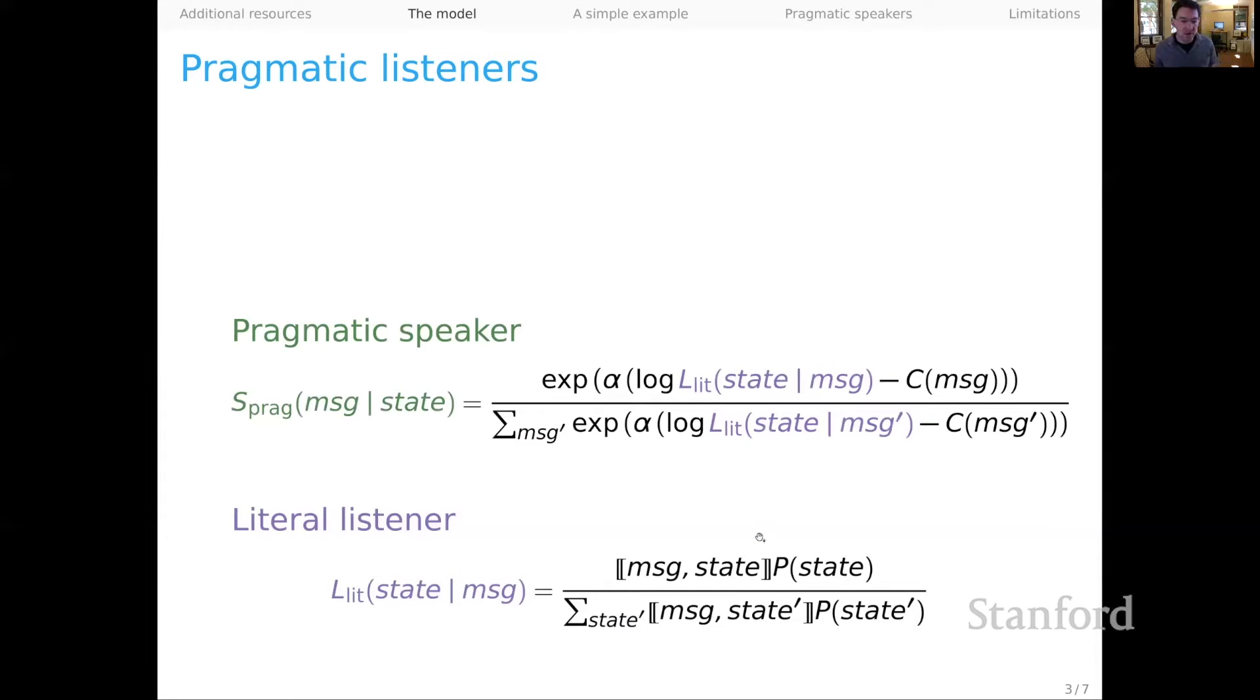From there, we build the pragmatic speaker. Speakers in this model observe states of the world, things they want to communicate about, and then they choose messages on that basis. And the core thing to observe here is that the pragmatic speaker reasons not about the semantics of the language, as the literal listener does, but rather about the literal listener, who reasons about the semantics of the language. And for this pragmatic speaker here, it does that taking costs of messages into account. And it also has this temperature parameter alpha, which will help us control how aggressively it reasons about this lower agent, the literal listener. Other than that, you can probably see that this model is a kind of softmax decision rule, where we're combining the literal listener with message costs.